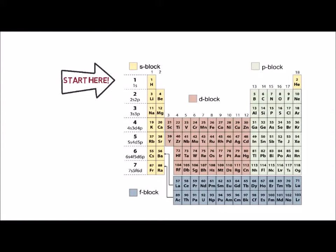When you arrive at the D and F blocks, subtract 1 from the N value for the D orbitals, and 2 from the N value for the F orbitals. This periodic table has the electron configuration for each row written along the left-hand side, using the method just outlined.